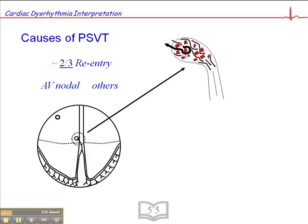That slows the impulse down through the AV node, allowing time for the atria to contract. These areas of non-conductive tissue are also perfect for creating the right circumstances for re-entrant ectopic foci to occur and re-entrant tachycardias to occur.